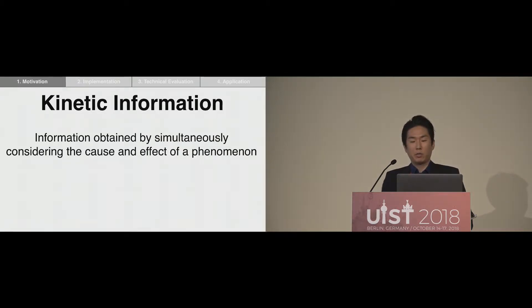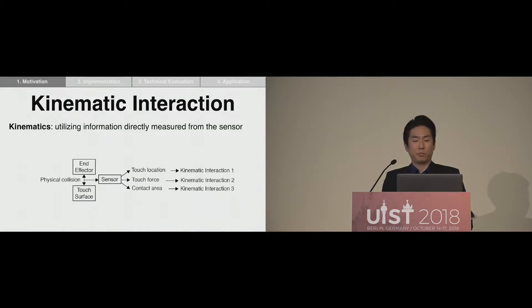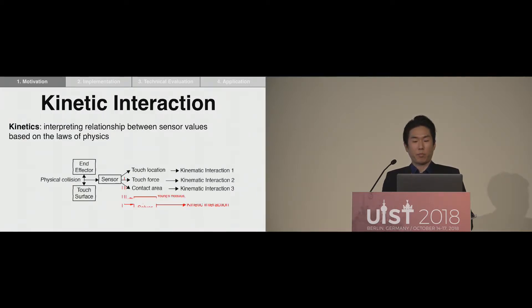Theoretically, kinetic information refers to information obtained by simultaneously considering the cause and effect of a phenomena. In other words, using kinetic information in touch interaction not only uses the value measured directly from the sensor, but also the physical relationship between the values. Existing touch techniques have used kinematic information such as touch location, force, and contact area directly measured from the sensor — this can be called kinematic interaction. However, some physical information can only be obtained by interpreting the relationship between the measured values from the sensors, and is called kinetic information.